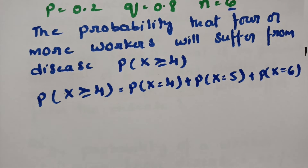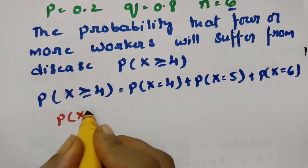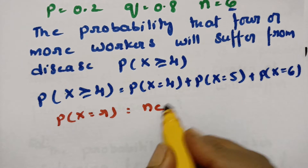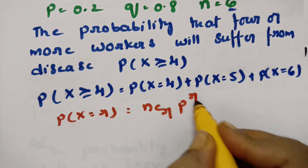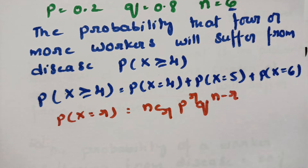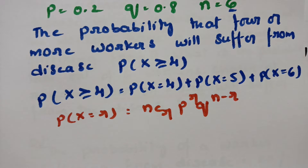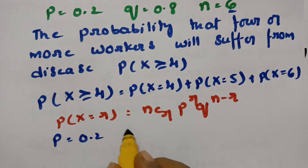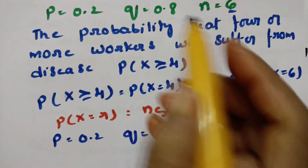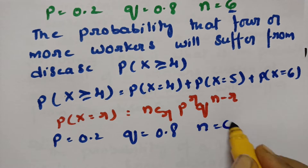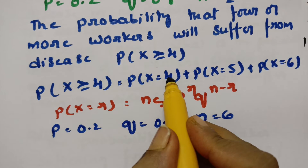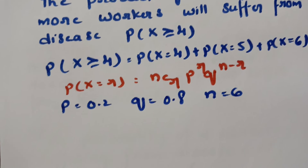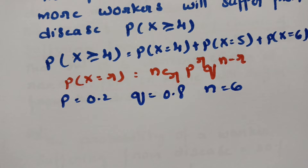The binomial formula is: P(X = r) = nCr × p^r × q^(n−r). Here p = 0.2, q = 0.8, n = 6, and r takes values 4, 5, and 6 respectively for the three terms we need to calculate.